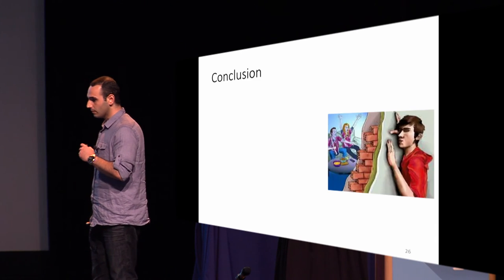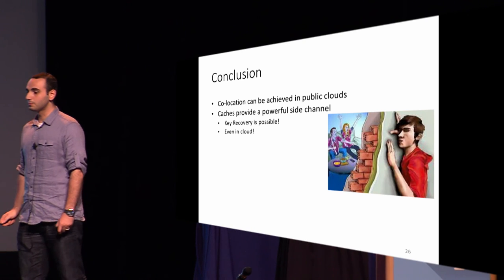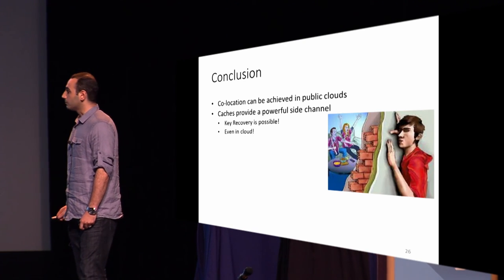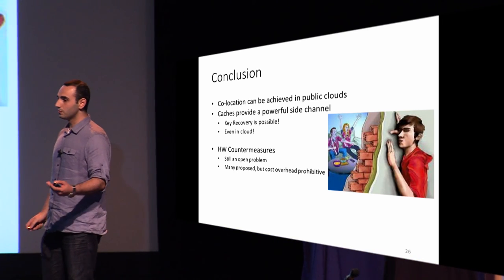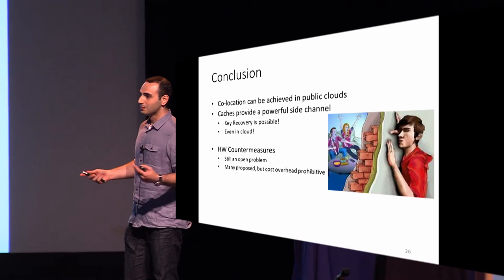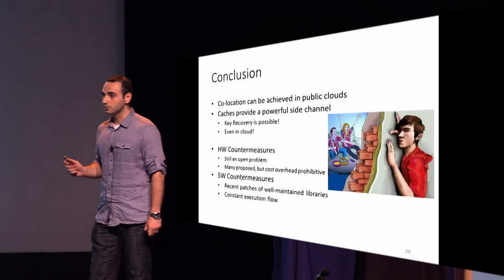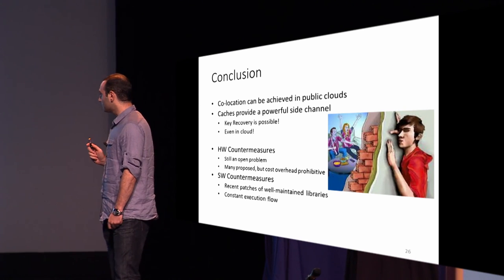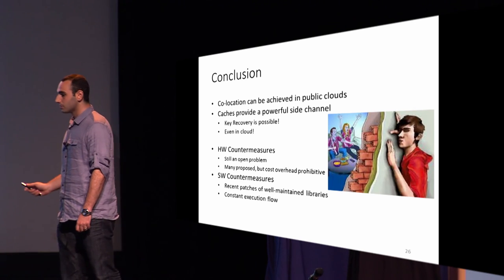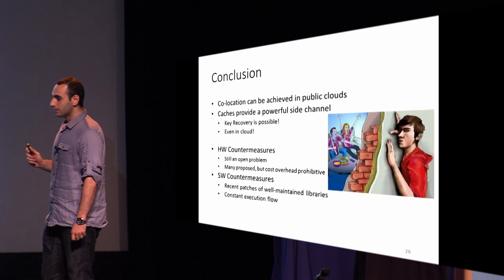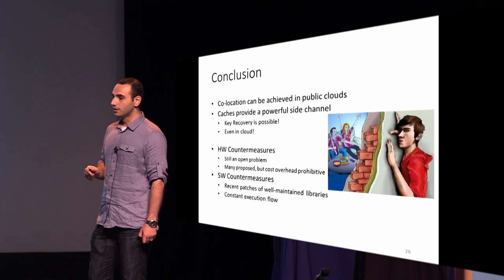In conclusion, we show that co-location can still be achieved in public clouds — specifically in the largest public cloud — in 2016. Caches provide a powerful side channel, powerful enough to perform key recoveries even in the cloud. As for countermeasures, many hardware countermeasures have been proposed; the most obvious is reduced cache usage, which is not feasible performance-wise. For software countermeasures, recent patches of well-maintained libraries do protect against these attacks, but the software update process has a cost and users are not keen on updating. For crypto library authors, constant execution flow is paramount — there should be no secret-dependent branches, memory accesses, or cache accesses that leak information.